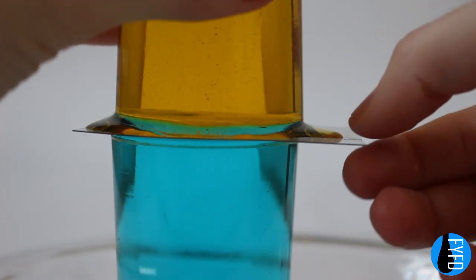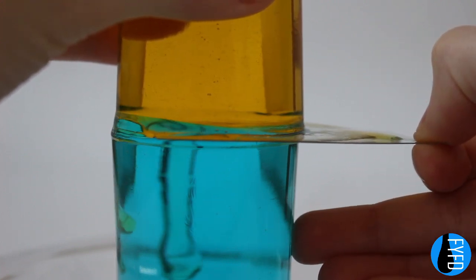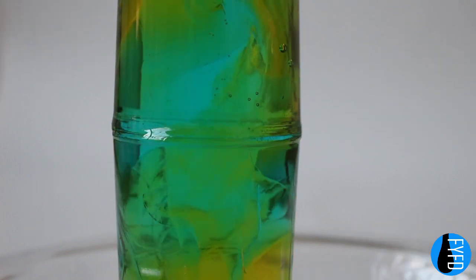Now we remove the barrier and watch what happens. Even with the high viscosity, things go quickly. Fingers of the lighter blue fluid push upward and the yellow fluid sinks. The fingers deform, overturn, and mix.